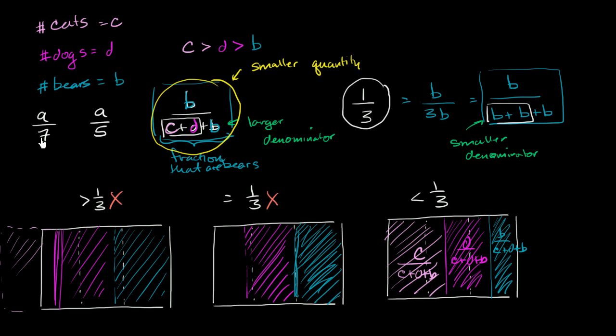Well, here you're dividing a by 7. You're dividing into many more chunks than over here. So this right over here is smaller. This right over here is larger. This is the larger. This right over here is smaller.